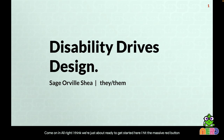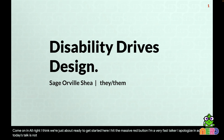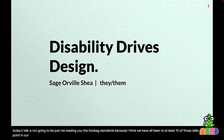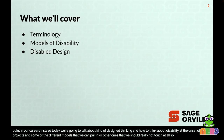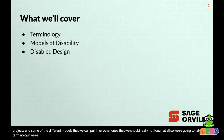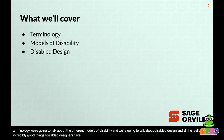Today's talk is not going to be just me reading you the WCAG standards, because I think we have all been to at least 10 of those talks at some point in our careers. Instead, we're going to talk about design thinking and how to think about disability at the onset of projects — the different models we can pull in, terminology, and all the incredibly good things that disabled designers have actually brought to us.